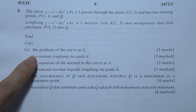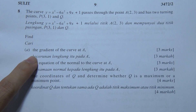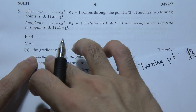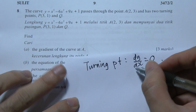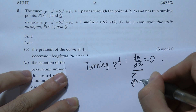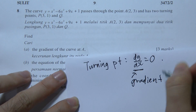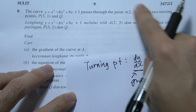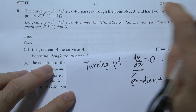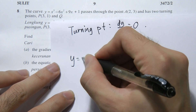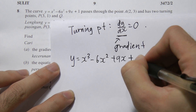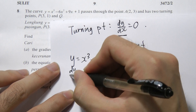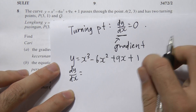Part A asks us to find the gradient of the curve at A. In the differentiation chapter, gradient means dy/dx. So we write down the equation y = x³ - 6x² + 9x + 1 and differentiate it to find the gradient of the curve.